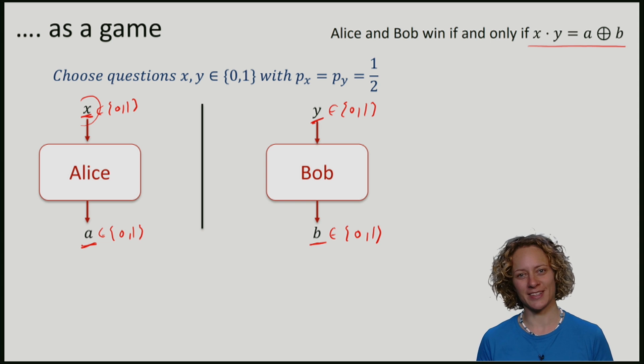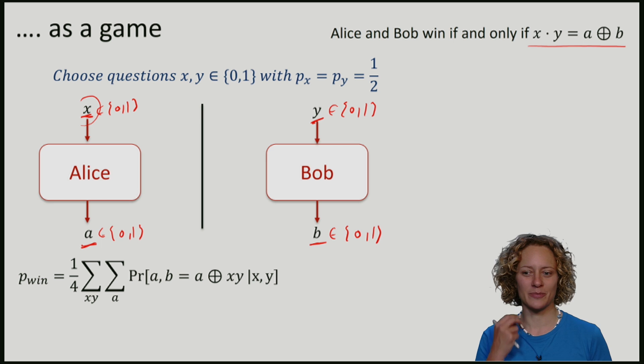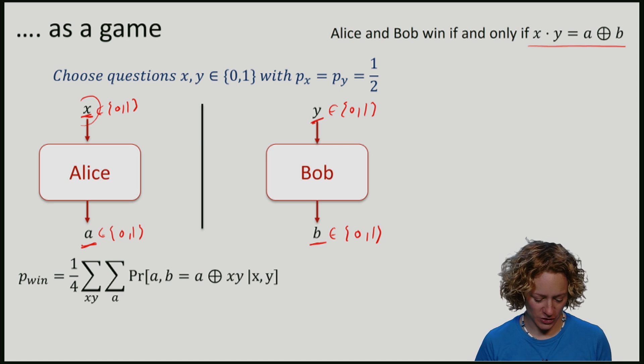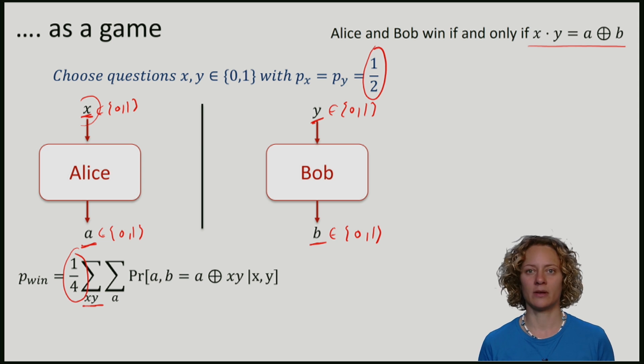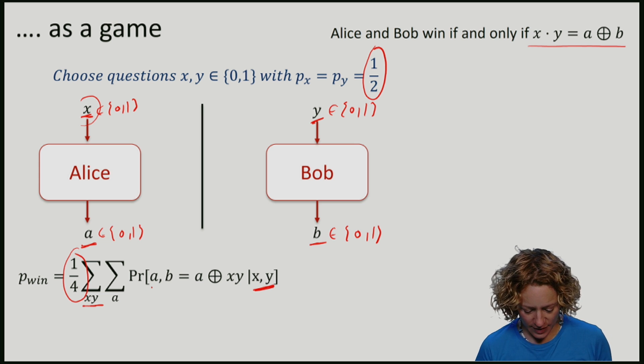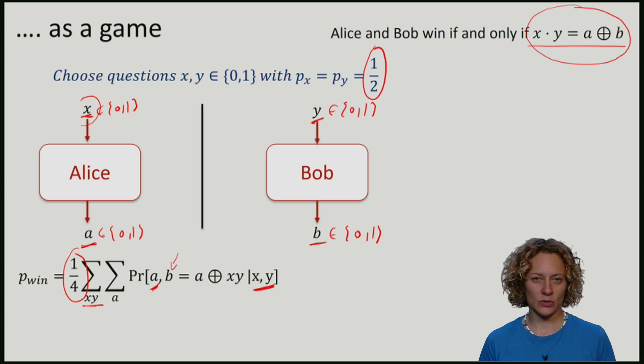The quantity that we will be interested in is the probability that Alice and Bob win the game. This probability is the average over the questions x and y, where the quarter comes from the fact that we choose x and y each with probability half. We are interested in the probability that given some question x and y, Alice and Bob produce some answers A and B. We are interested in if I fix an answer of A, the correct answer for Bob would be given by this rule. So the probability that they win can be expressed by applying this rule.